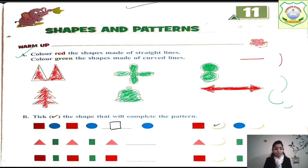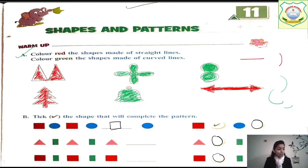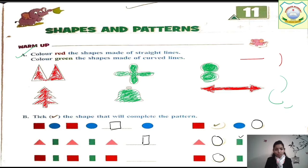You have to circle the correct answer in these options. Next we have: triangle, rectangle, rectangle, rectangle, rectangle — so here it will also be rectangle. You can see the rectangle here, so put a tick mark on it. If you want, you can put a tick mark on the option above, but there is space next to it so you can put the tick mark there.